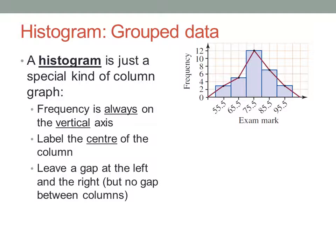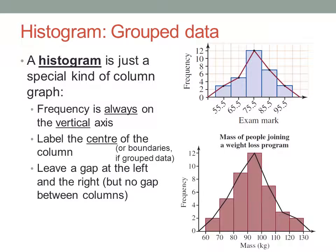But there is an alternative. You can instead, if you prefer, label the edges of the column with the boundary values between the groups, like this. You can choose. Usually the boundaries would be labelled, like the one on the bottom here, for continuous data.